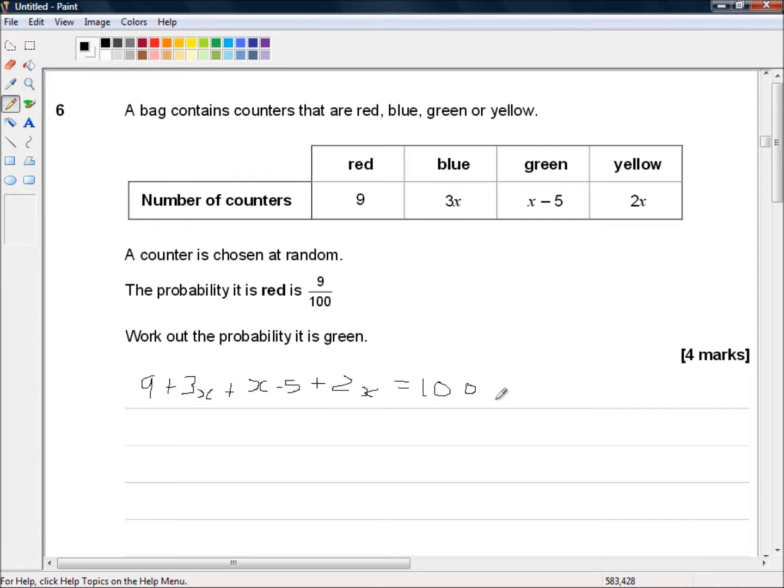So all we have here is x terms and numerical terms, so it's easy straightforward now. All we have to do is gather all the like terms.